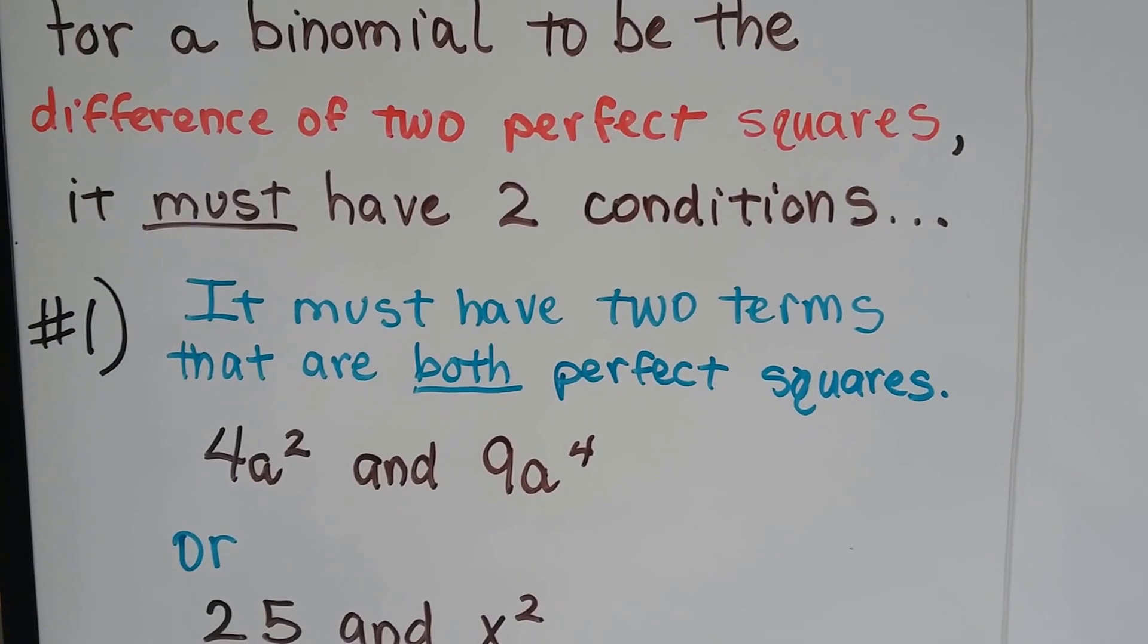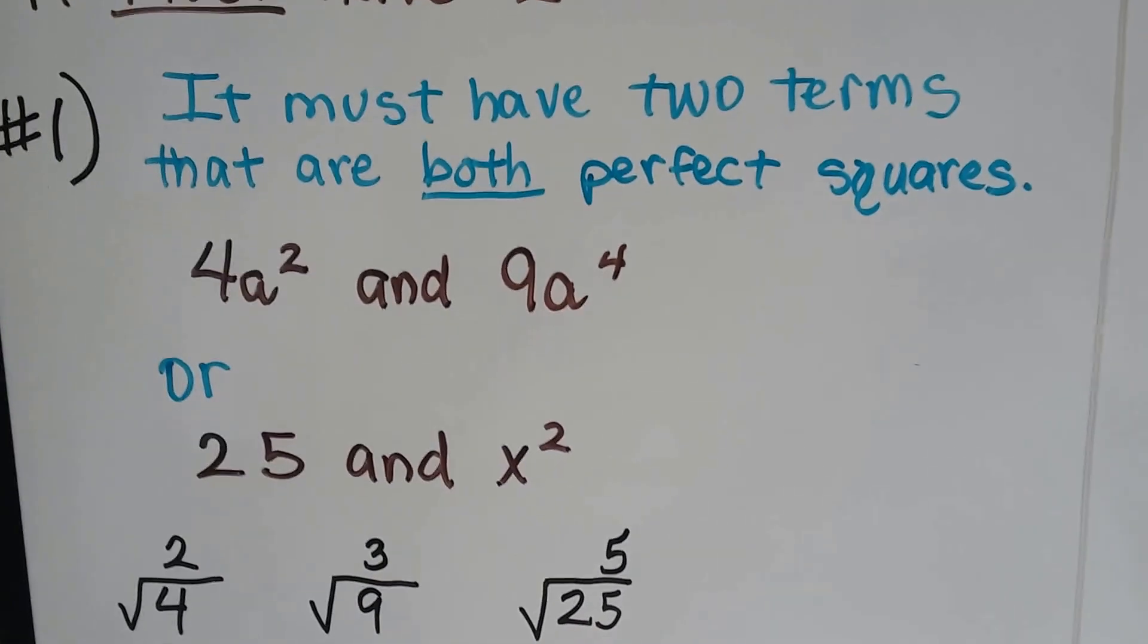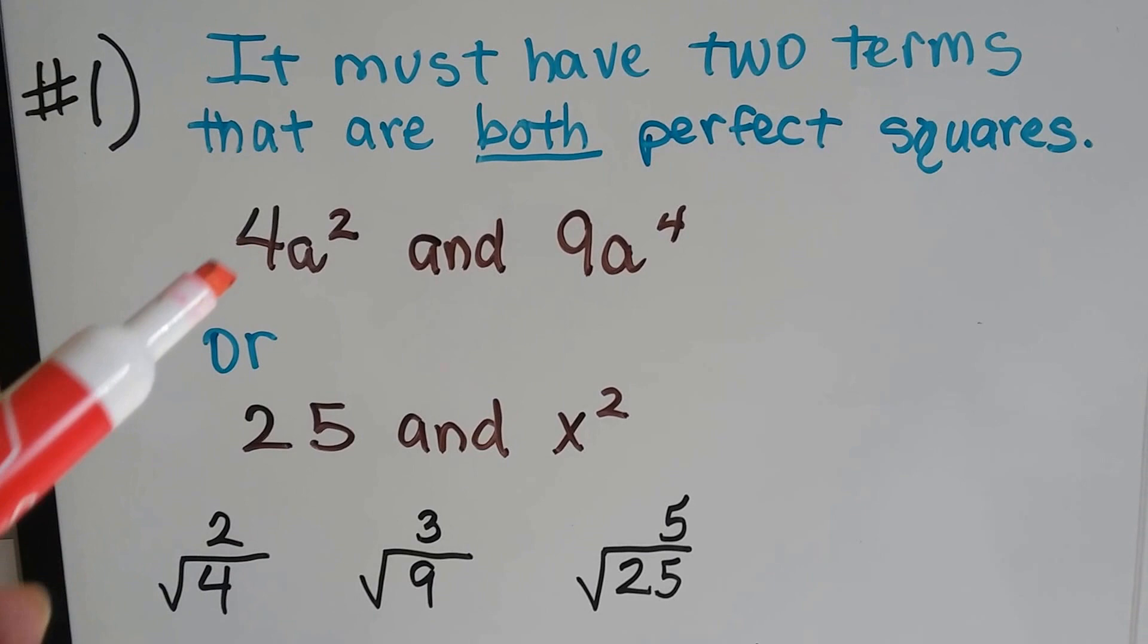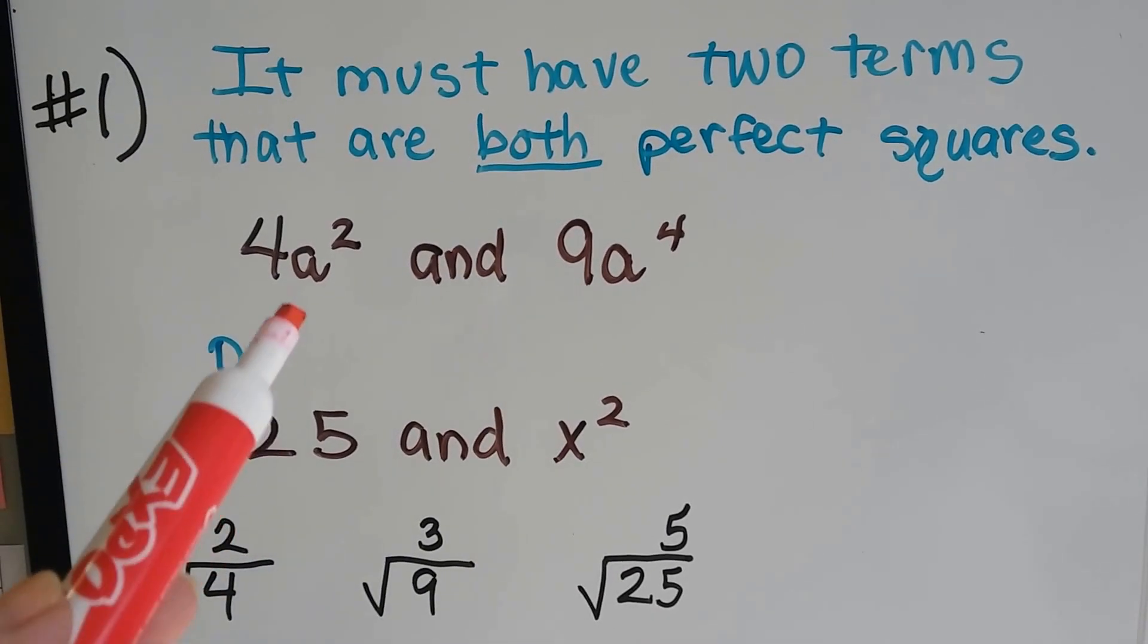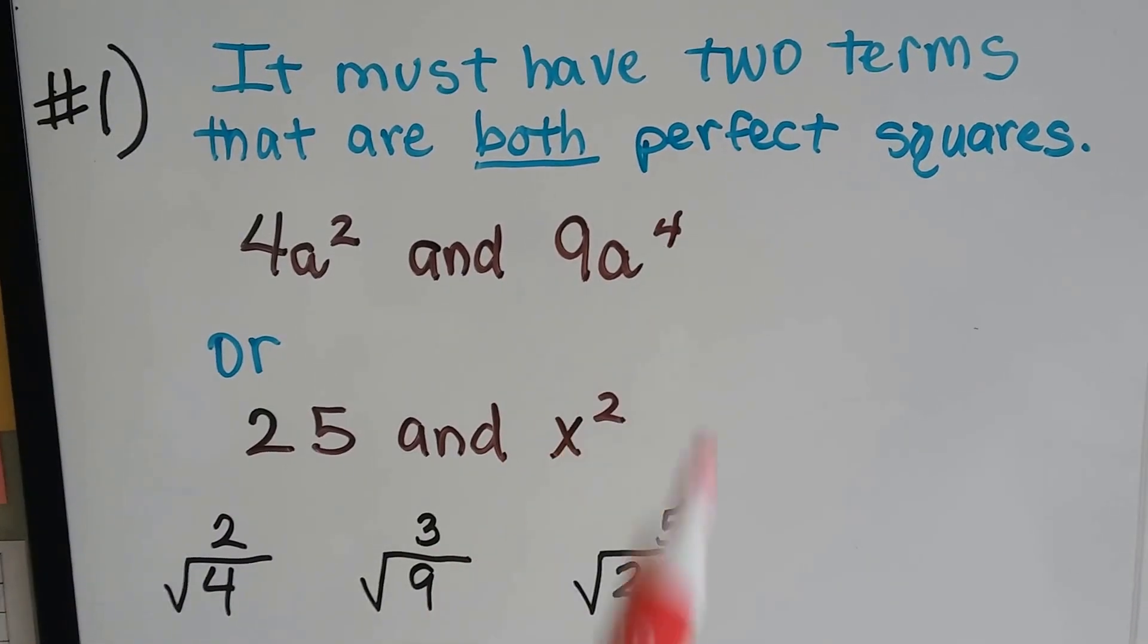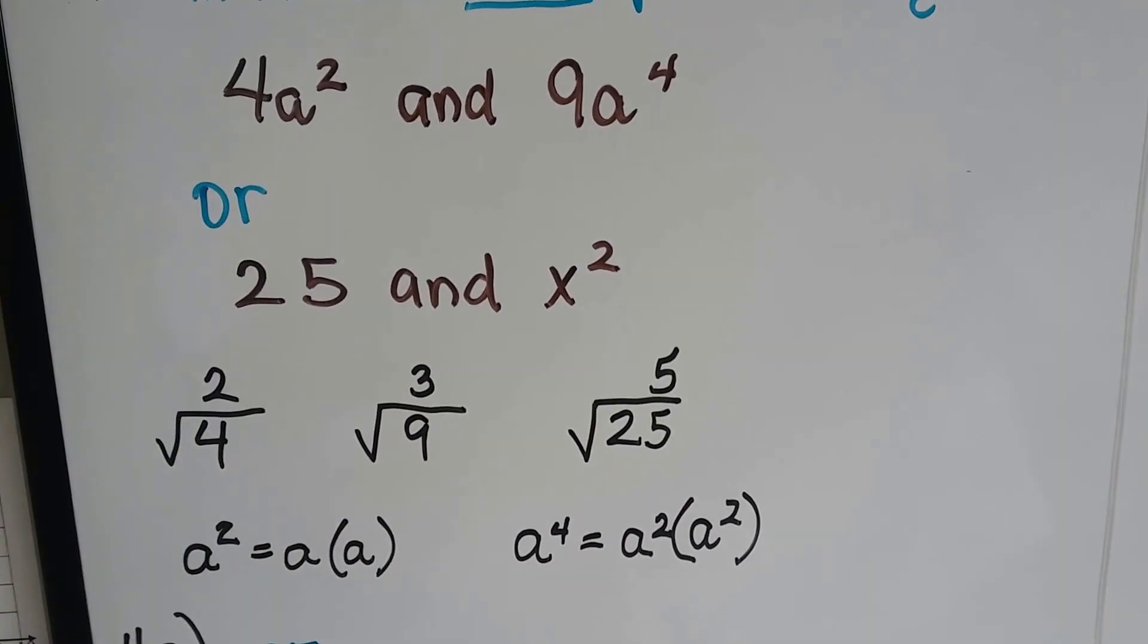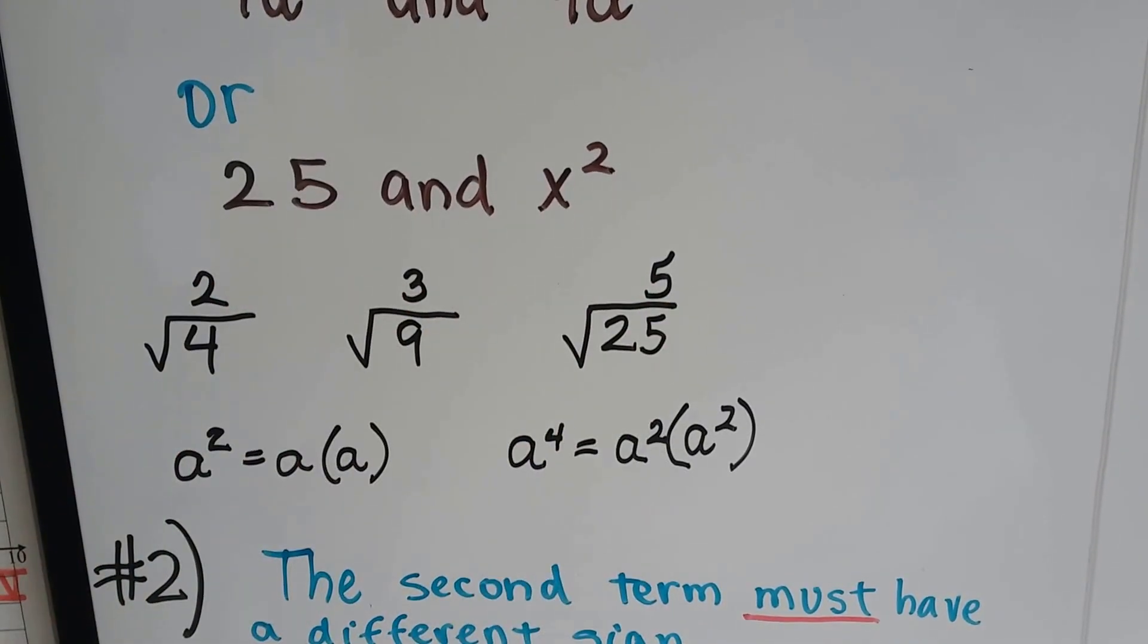The first one is it must have two terms that are both perfect squares. So 4a squared and 9a to the fourth power are perfect squares because 2 times 2 is 4 and 3 times 3 is 9, and a times a is a squared and a squared times a squared gives us a to the fourth power. Or even 25 and x squared because 5 times 5 is 25 and x times x is x squared. So you want to just have a square.